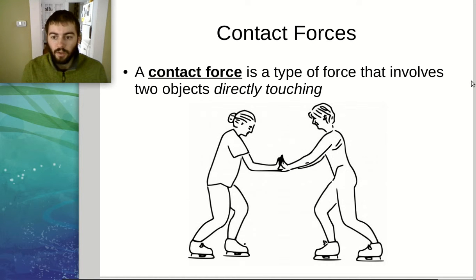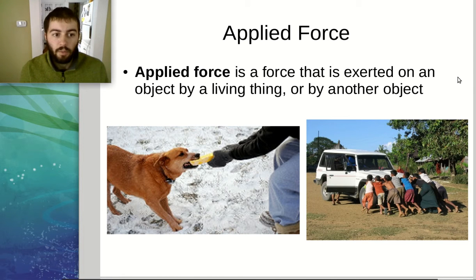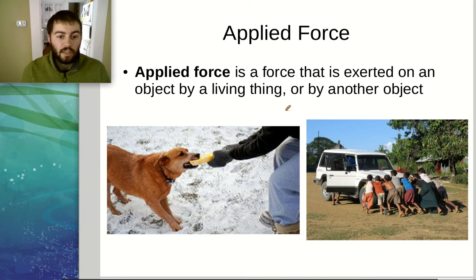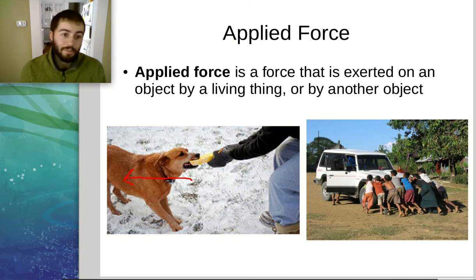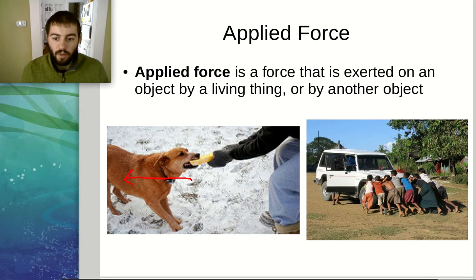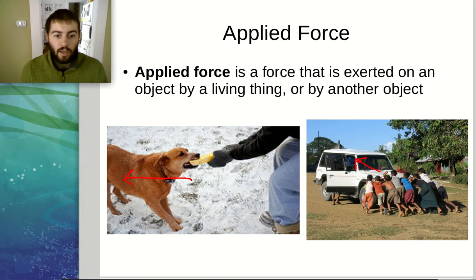There are other types of forces called distance forces that don't involve direct contact, but because this force involves the direct contact of two objects, that is what makes it a contact force. We're going to look at a few different types of contact forces. The first type is called applied force — basically just a force that's exerted by anything: a living thing, a person, or an object. This dog is pulling on a toy, applying a force to the left. These kids pushing a car is another example of an applied force, because they're directly touching the car.